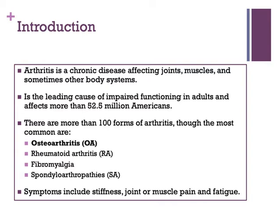Osteoarthritis is primarily a joint-specific form, while the others are systemic and affect more than just the joints, although even osteoarthritis has some systemic inflammatory responses. The most common symptoms of arthritis, regardless of the type, are stiffness, joint or muscle pain, and fatigue. Many people choose to stop exercising, believing that activity might make the pain worse or speed up the degenerative process. However, proper exercise decreases pain and does not actually speed up joint degeneration — rather it helps maintain normal function within that joint.